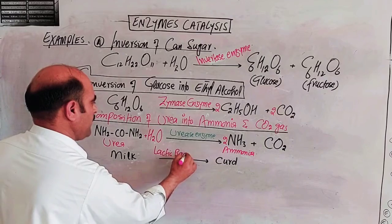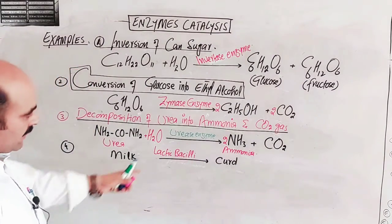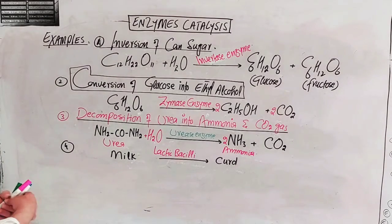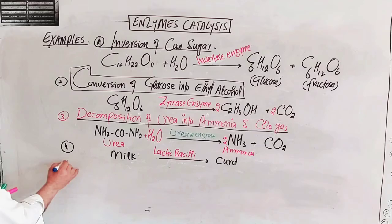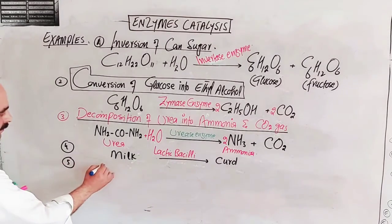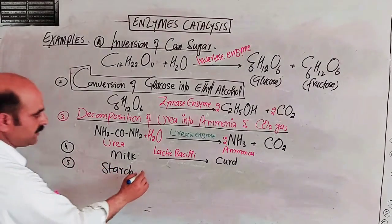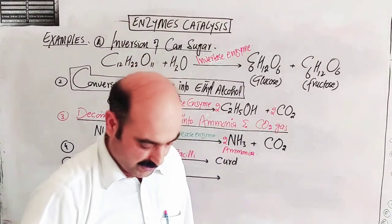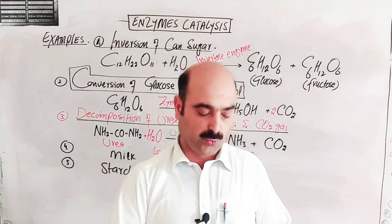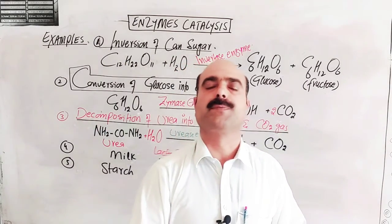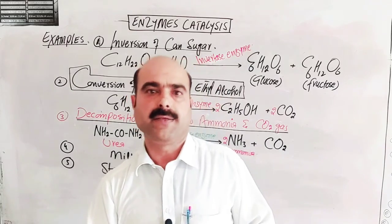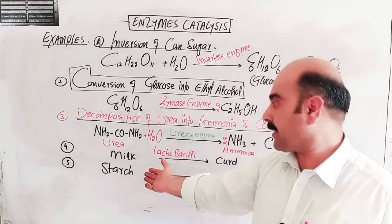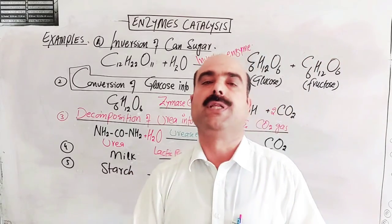Another example involves lactic bacilli enzyme, which can curdle or cut milk. Also, when you eat food containing carbohydrates and starch, digestion begins right from the mouth. The starch is broken down by enzymes into diffusible glucose. The salivary gland secretes saliva containing the enzyme Ptyalin, which breaks down large complex starch molecules into simple diffusible sugar or glucose.